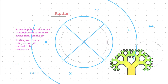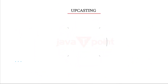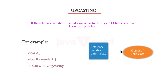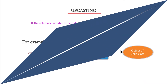Now let's first understand upcasting before runtime polymorphism. If the reference variable of a parent class refers to the object of a child class, it is known as upcasting. Here's a simple example of upcasting. Now let's see an example of Java runtime polymorphism.